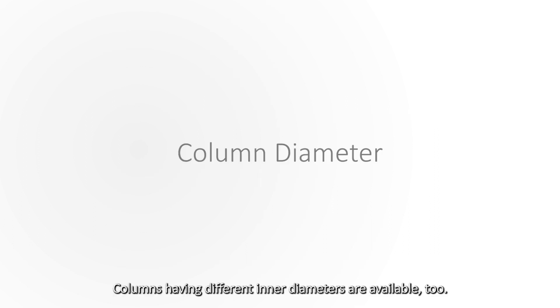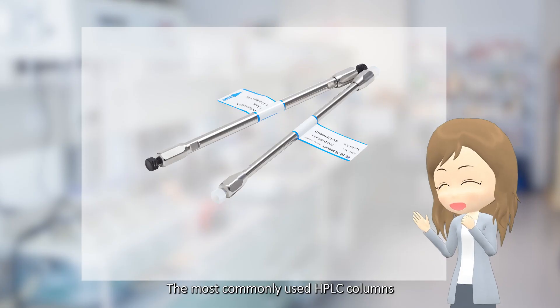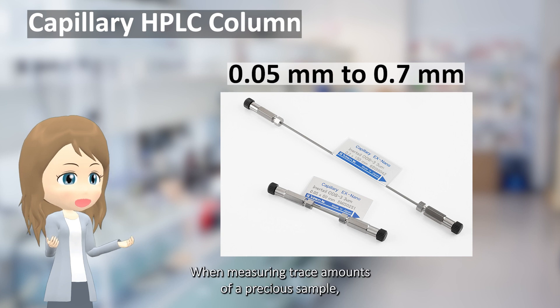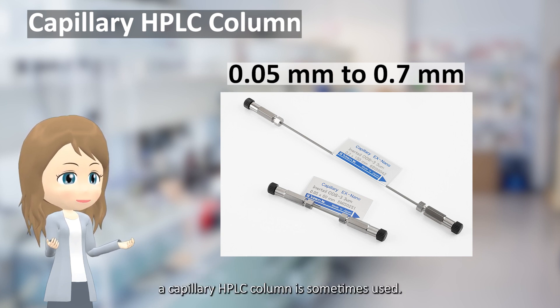Columns having different inner diameters are available, too. The most commonly used HPLC columns have an inner diameter of 1 to 4.6 millimeters. When measuring trace amounts of a precious sample, a capillary HPLC column is sometimes used.